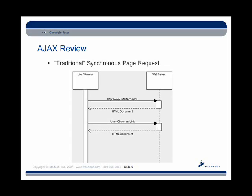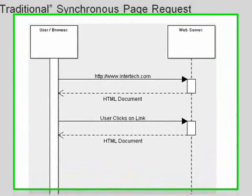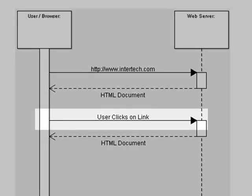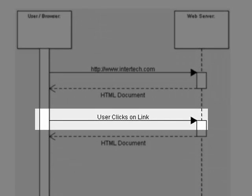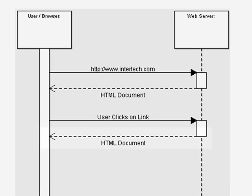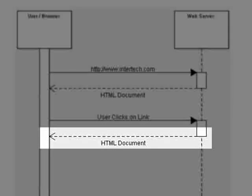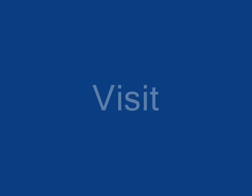In addition, an entire HTML document is sent back — it's typically not just a fragment of HTML or a fragment of data to be put inside a web page. Now, if a user wants to do something else on this page, perhaps click on a link, another request is sent across the wire. The web server finds the resource, and another entire HTML document is sent back, which completely draws over the existing page.